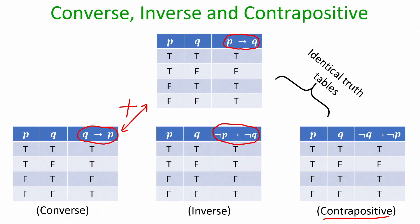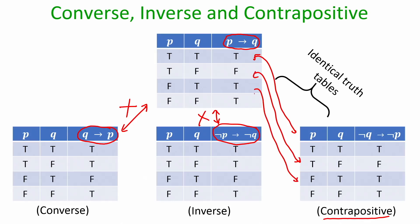If you look at the truth table of P implies Q and its contrapositive, they are the same — the first, second, third, and fourth rows of both tables are identical. That is why P implies Q and negation Q implies negation P are the same statements; they are logically equivalent.